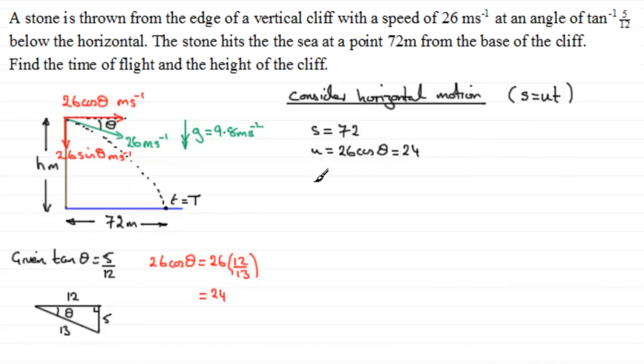And we're out to find the time T, which I'm calling big T. So using s equals ut, or distance equals speed times time, what we have got here is that s is 72 equals u, which is 24, multiplied by T. And if I divide both sides by 24, we therefore find that T equals 72 divided by 24, which is 3, 3 seconds. So the time of flight is 3 seconds.